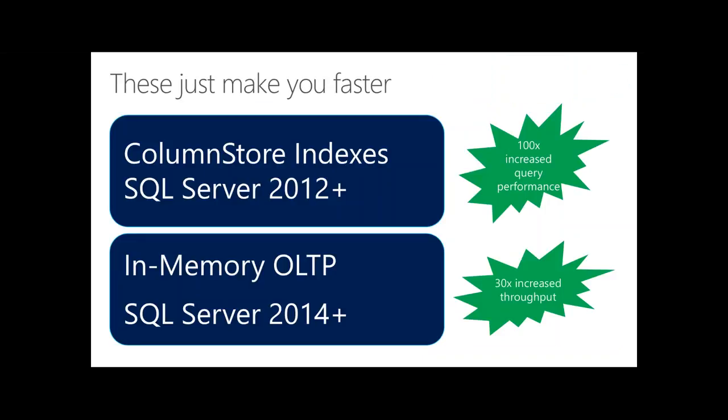Before going into details, I want to make sure you're aware of two important features many people are not taking advantage of: Column Store Indexes and In-Memory OLTP. For any warehousing or large-query application, look hard at Column Store — 100x increased query performance is not something we made up; we've seen it for many customers. For OLTP-based applications, look at In-Memory OLTP, where 30x increased throughput is very achievable. SQL Server 2016 also lets you combine these in something called Hybrid Transaction Analytical Processing, or HTAP.